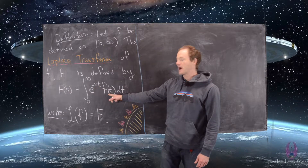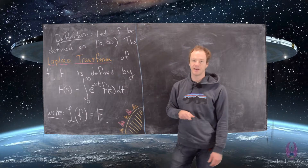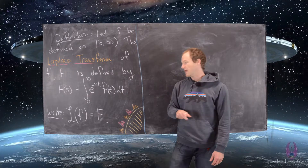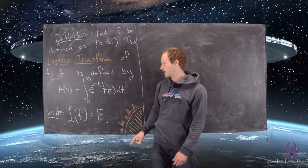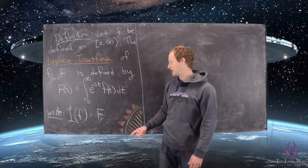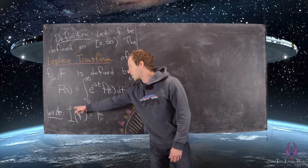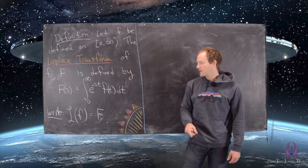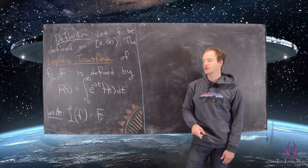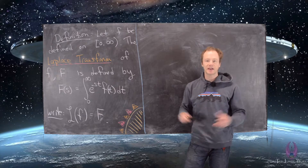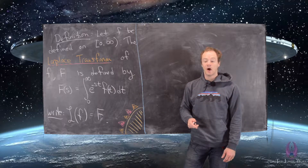It is the integral from zero to infinity of the exponential function e to the minus st multiplied by f of t, our original function, integrating over t. The notation we use quite often is the script L evaluated on little f, because the Laplace transformation is actually a linear transformation on the vector space of functions.